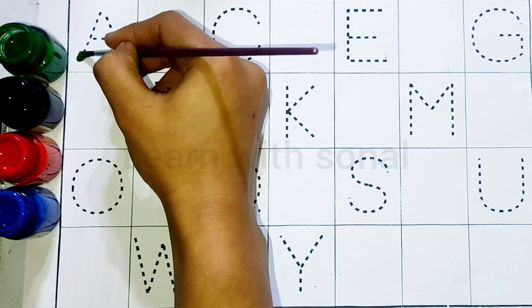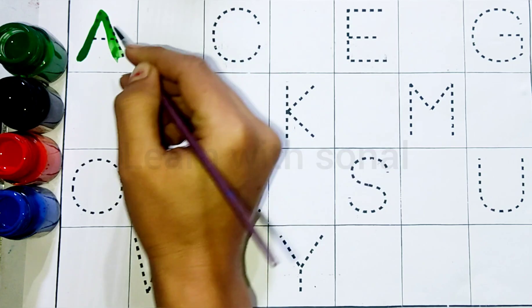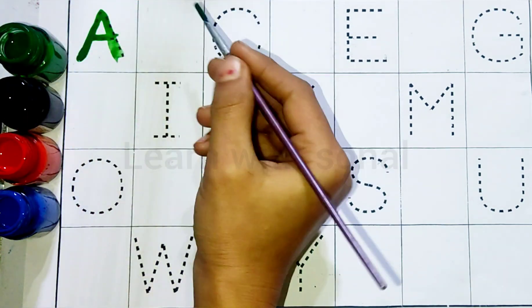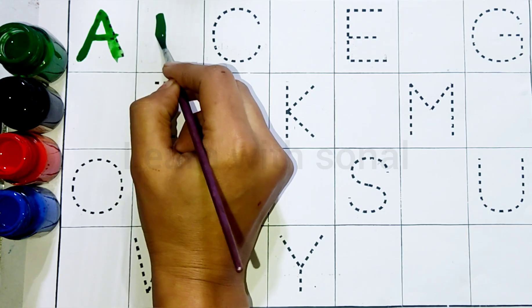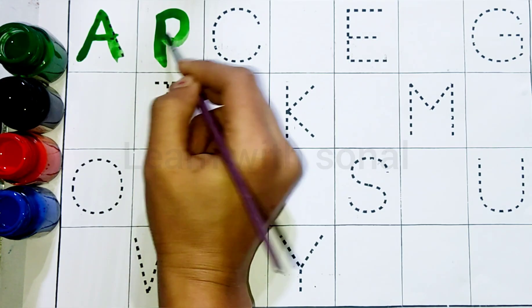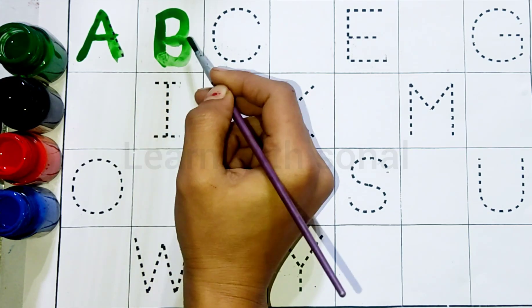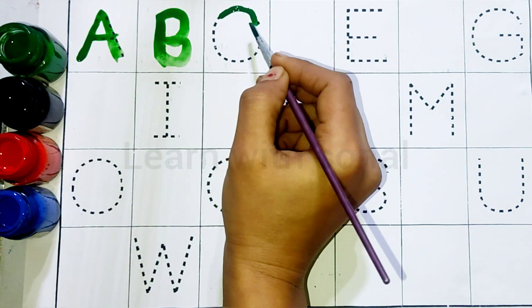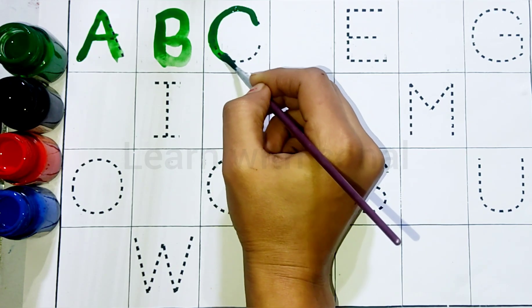Green colour. A, A for Apple. B, B for Ball. C, C for Cat.